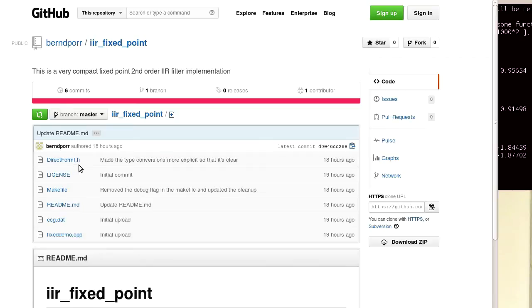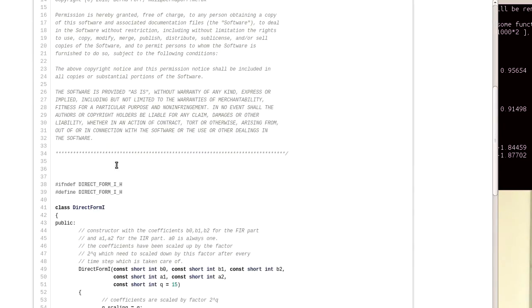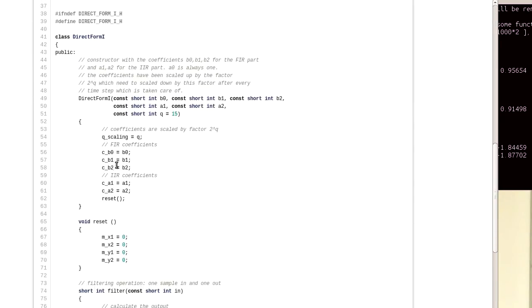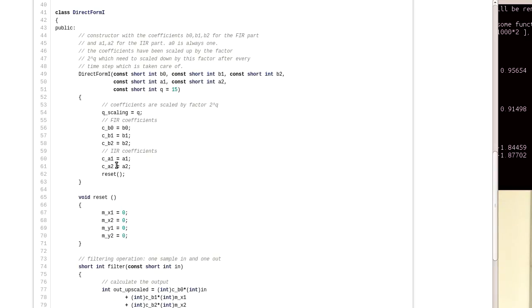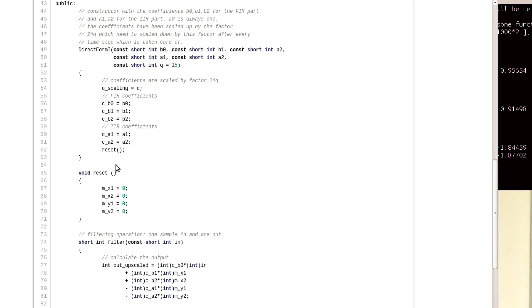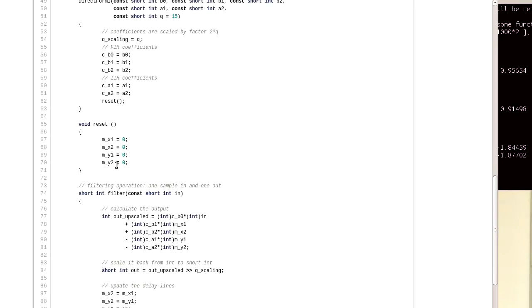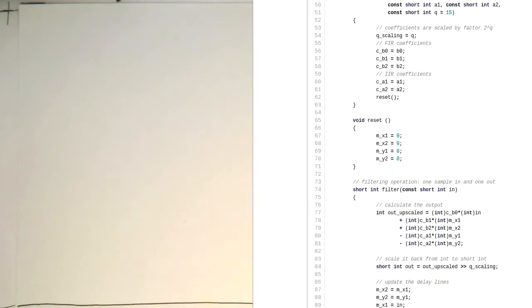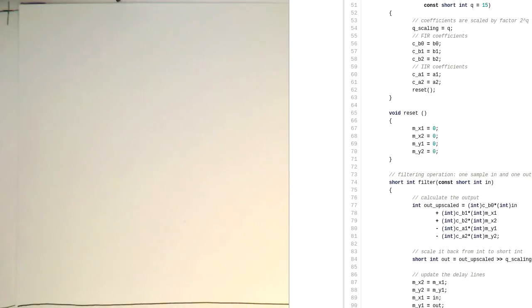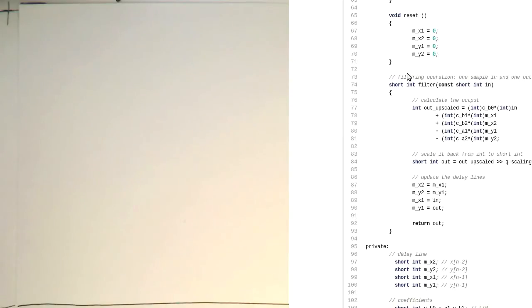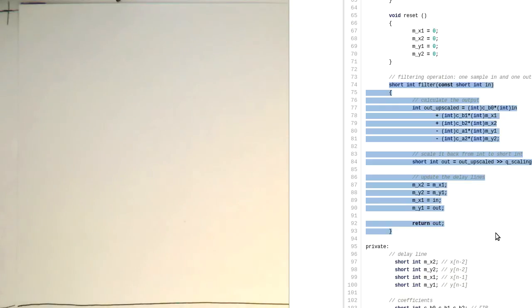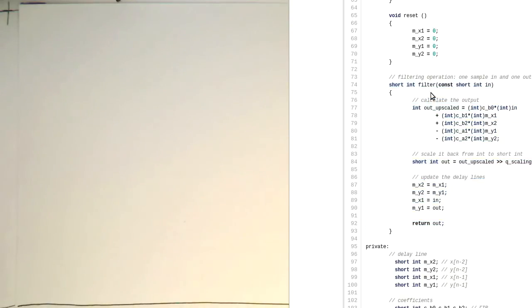I've created a direct form one filter here which is implemented in this header file. In this case I just squeezed everything in a header file and haven't done any CPP file, just to make it very compact. If we look at the coefficients in this filter routine, this is the actual filter routine in this class.